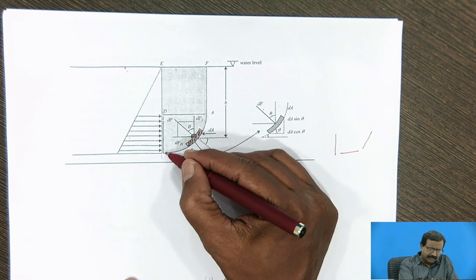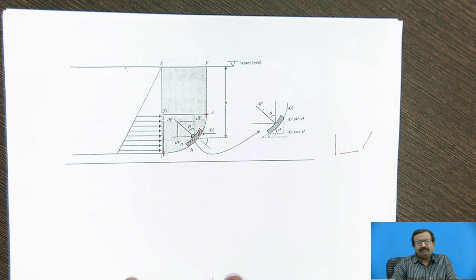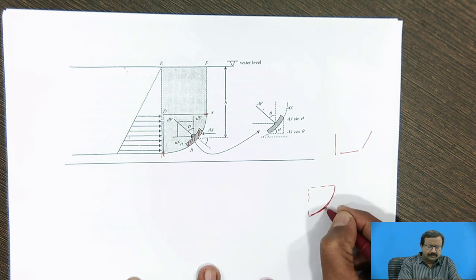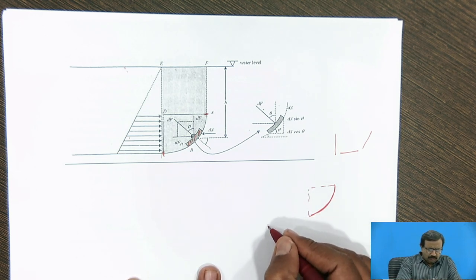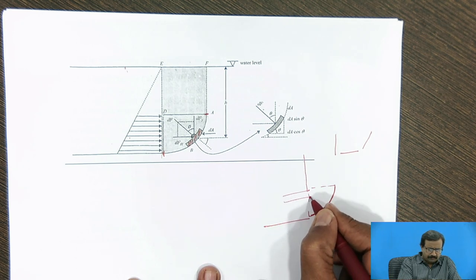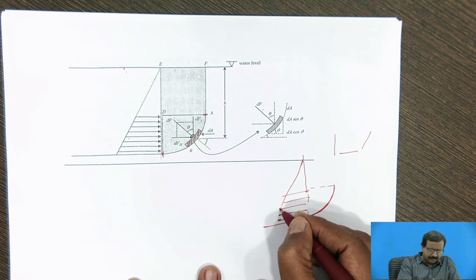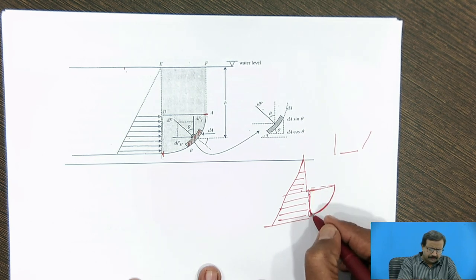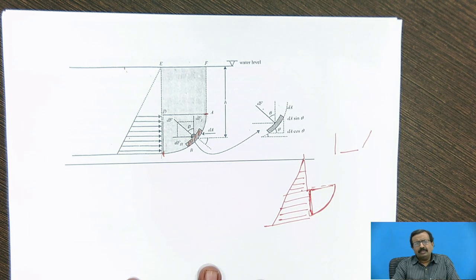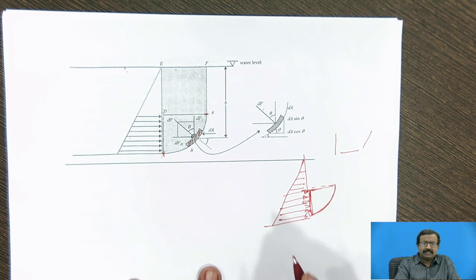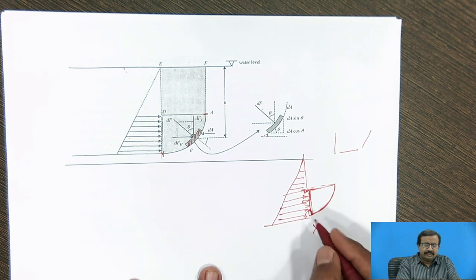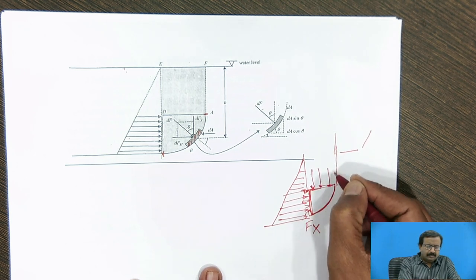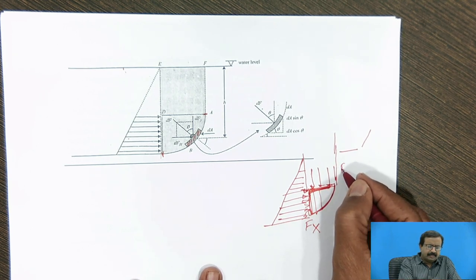To find the force on a curved portion, we use a simple tool. For a curved surface, whatever fluid is present in front of it exerts pressure along that line. Taking the projection of the surface, the force on the projected vertical area represents the x-component Fx, and the force on the projected horizontal area of this part represents the Fy component.